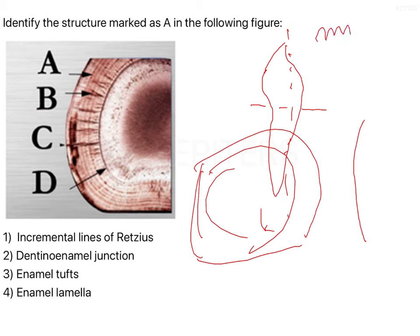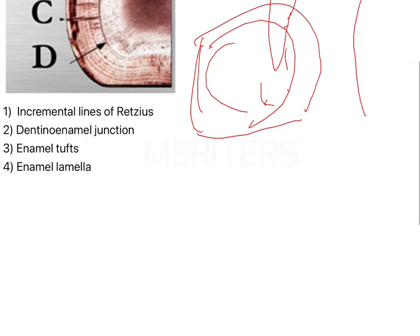There is a period when there is no matrix secreted. When you have your ameloblasts and the matrix has been secreted, the ameloblasts move forward and during this phase where they move forward there is no matrix secreted, so no calcification occurs. That is why it occurs in increments. All your hard tissues get deposited in increments, it is not a single process.